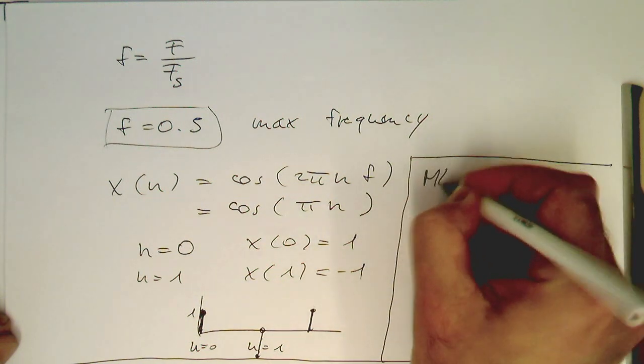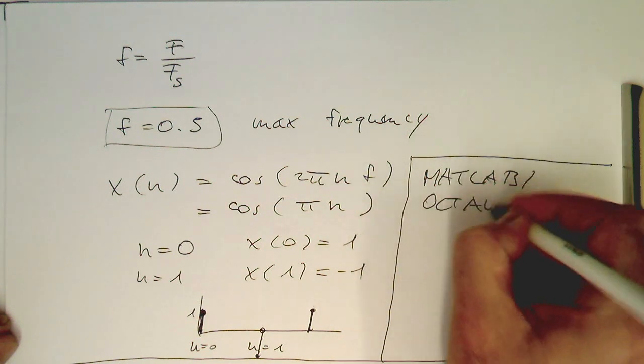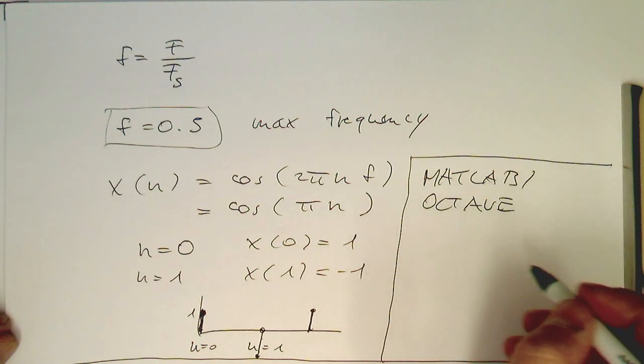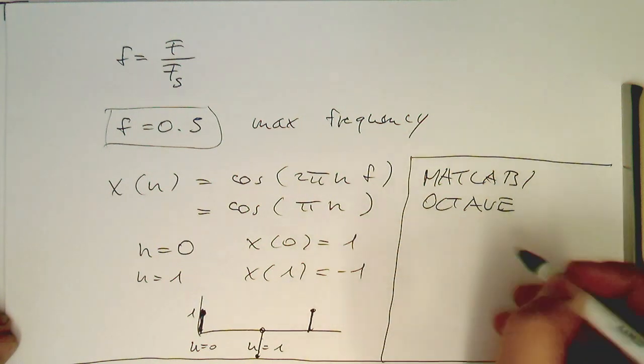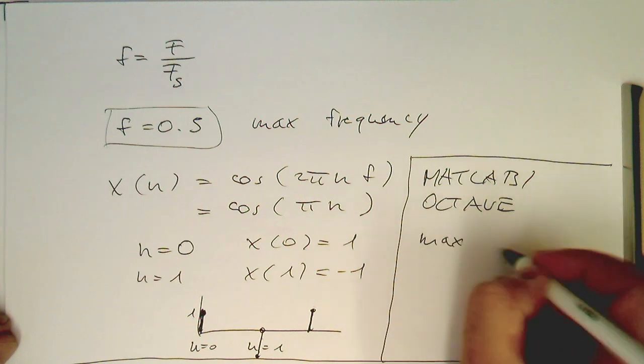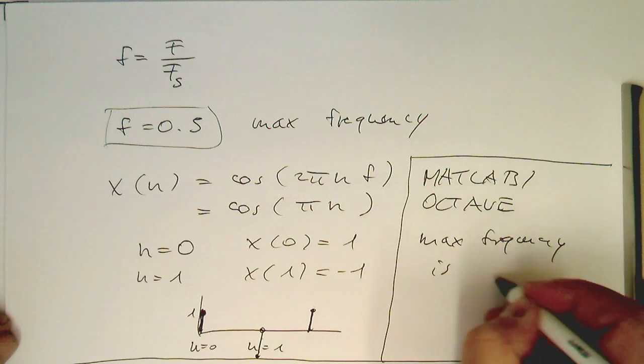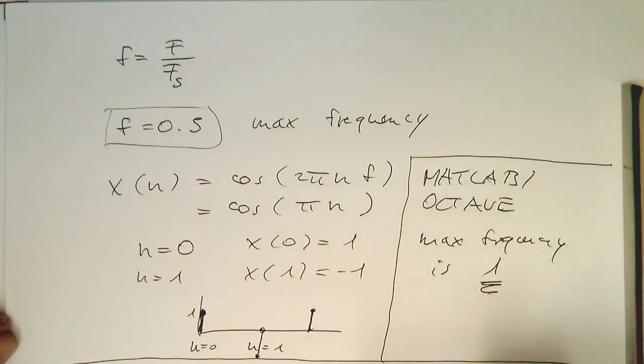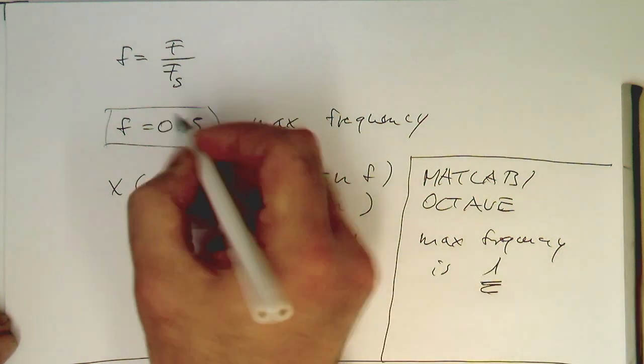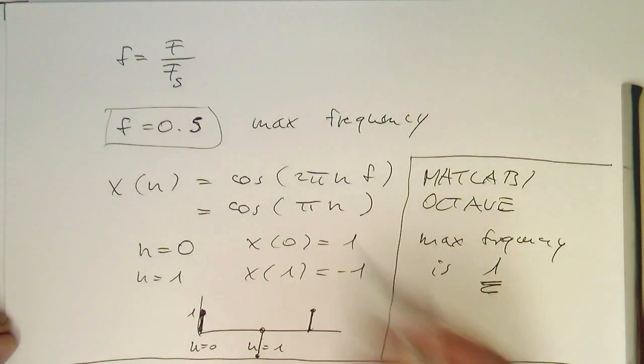That's a word of caution. Just about this here. MATLAB and also Octave, they use a different normalization. In MATLAB, the maximum frequency is 1. So we need to, if we do our calculations here, for MATLAB and Octave, we just need to multiply everything by factor two.